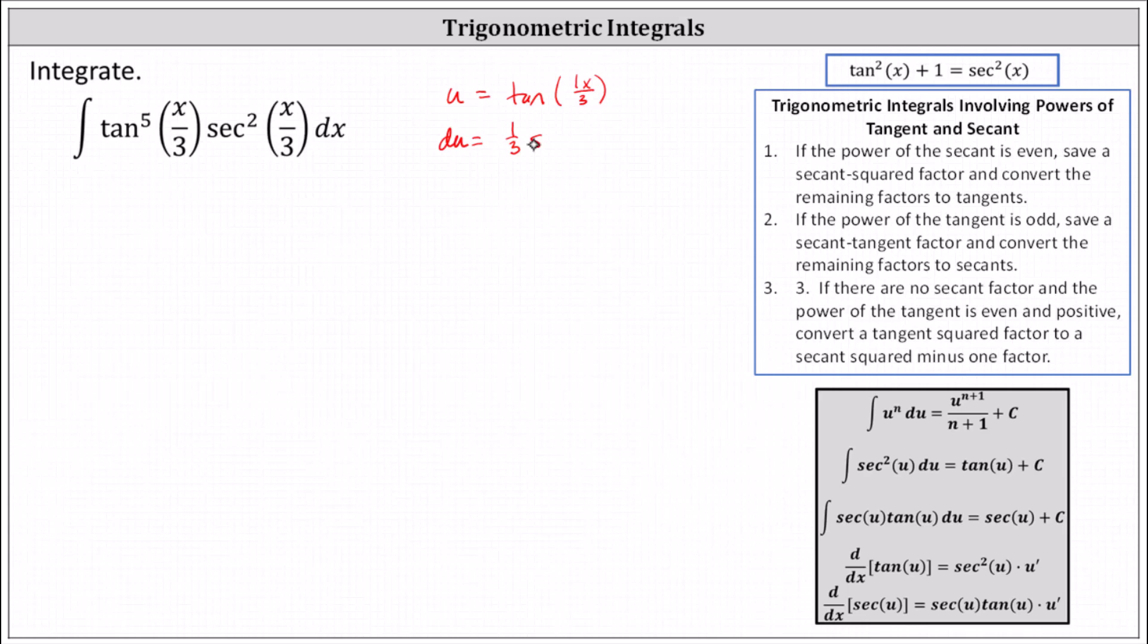We don't have a factor of one third in the integrand function and therefore we will multiply both sides by 3, which gives us 3 du equals secant squared of x divided by 3 dx.